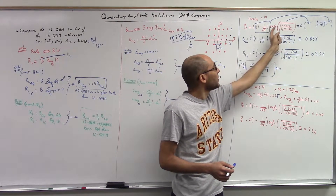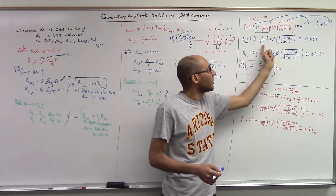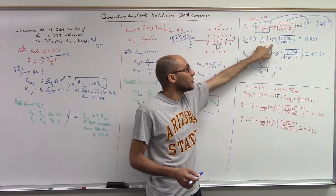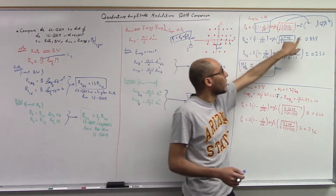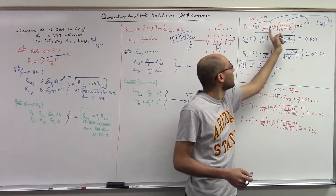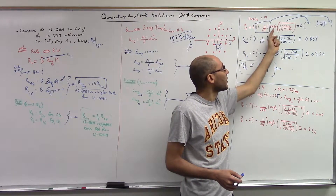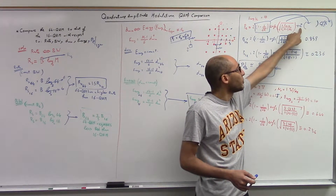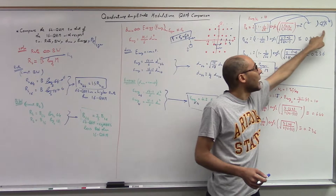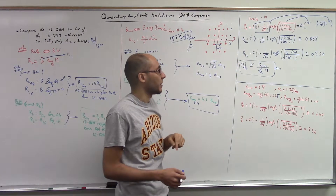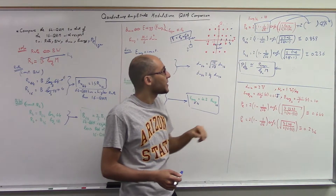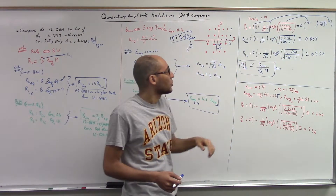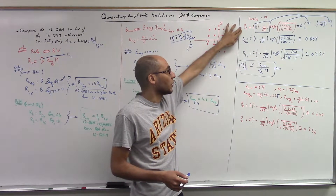After substituting directly you obtain the numerical result. Remember that the formula uses the complementary error function. If you want to use the Q function instead, replace the error function with the Q function by multiplying by 2 outside and by the square root of 2 inside the argument. You're free to use whichever table you have available.